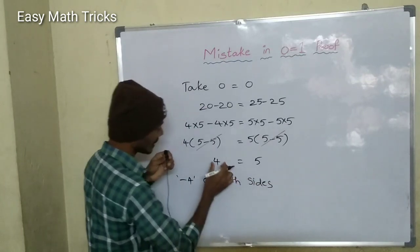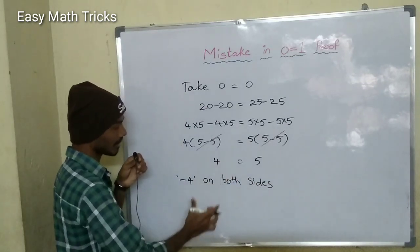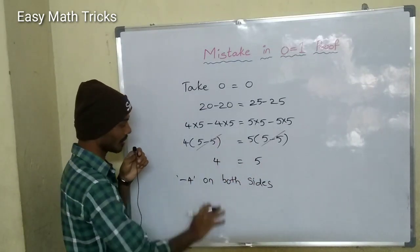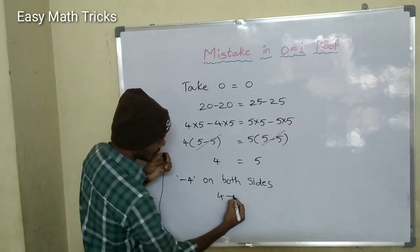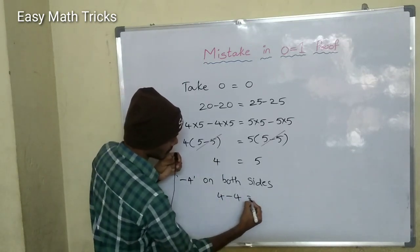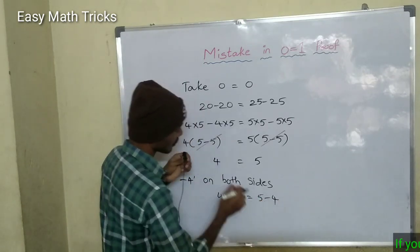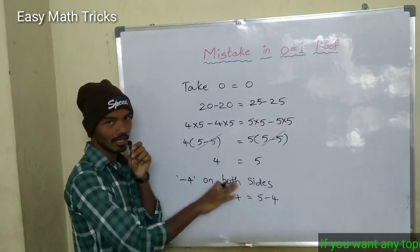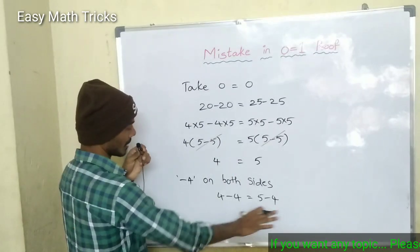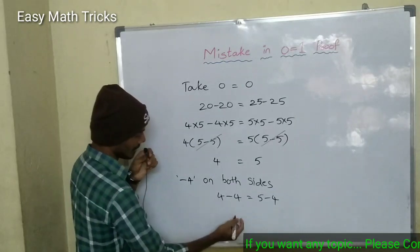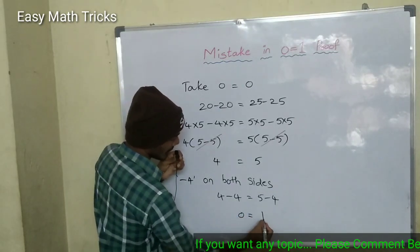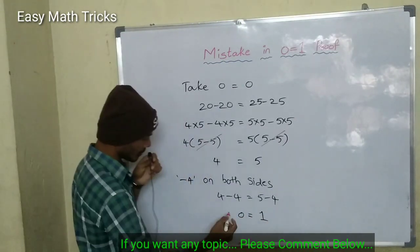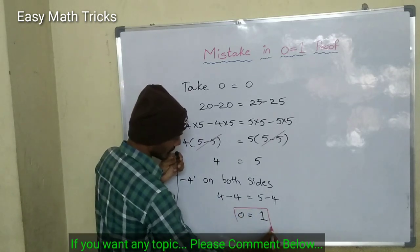2 minus 0. So, you can subtract 4. LHS, RHS. 2 minus 0. 4 minus 4. 5 minus 4, 1 minus 4. 1 minus 0. 2 minus 0. We have 0 equal to 1. Okay, proof of chasing — 0 is equal to 1.